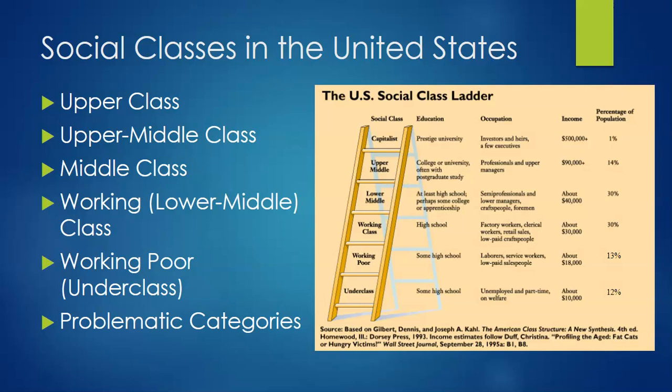Because socioeconomic status is based on a collection of complex variables that include income, wealth, and education, as well as power or prestige, it's difficult to say exactly where the middle class ends and the upper class begins. Also, individuals may embody a variety of characteristics that make precise socioeconomic status classification pretty difficult. Someone may be highly educated, for example, but make money cleaning houses while working on a novel.